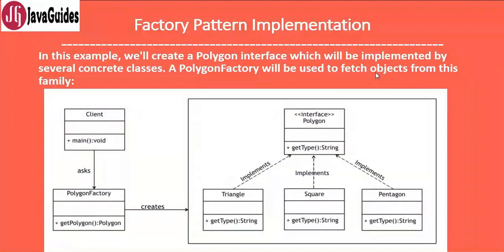Let's look at the factory design pattern implementation. In this example we'll create a Polygon interface which will be implemented by several concrete classes. PolygonFactory will be used to fetch objects from this family. In the class diagram, Polygon is an interface with a get type method. There are several polygon implementations - Triangle, Square, Pentagon - and PolygonFactory creates instances of these based on the input. The client uses PolygonFactory to get a Polygon object.